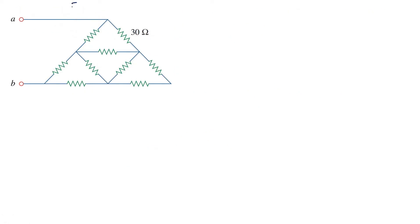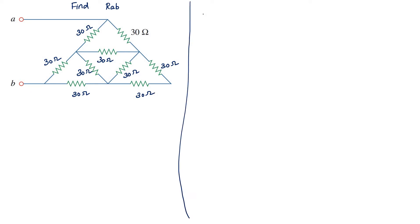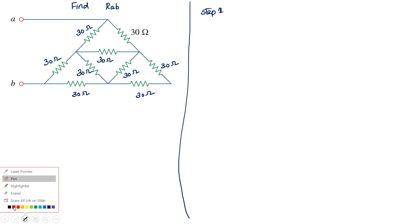Next problem: Find Rab for the network given below. All the resistances are the same, 30 ohm. This network consists of star and delta connected combinations. Step number 1 is to first find out the inner delta — convert the first delta into its equivalent star connection. Inside the delta, I am going to draw the star network.